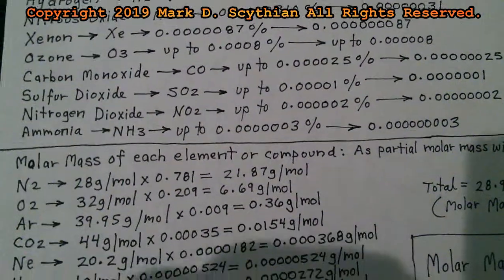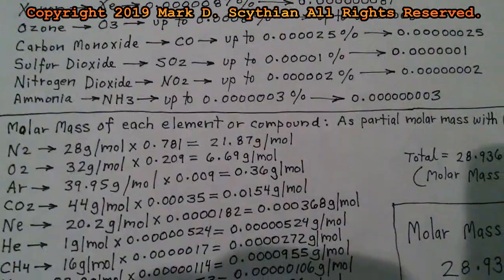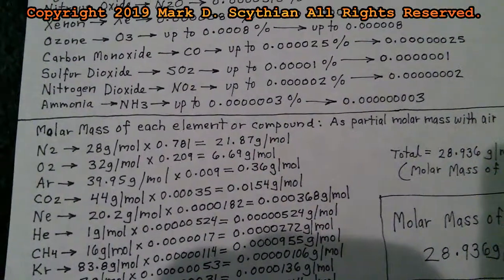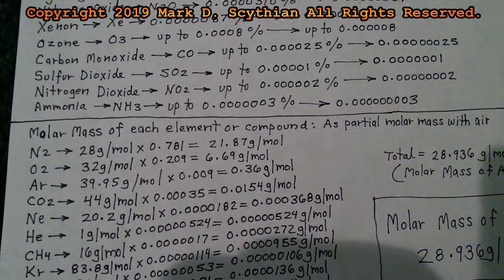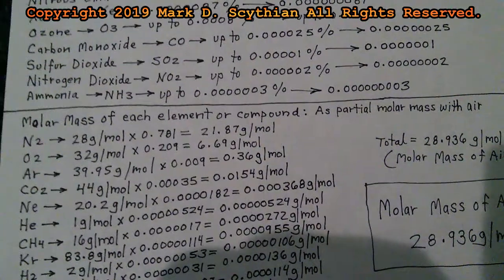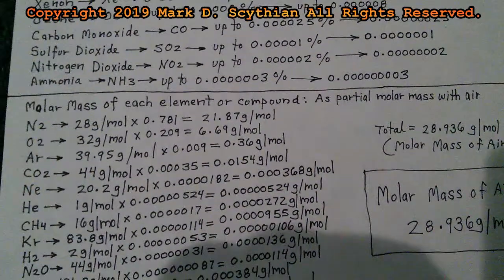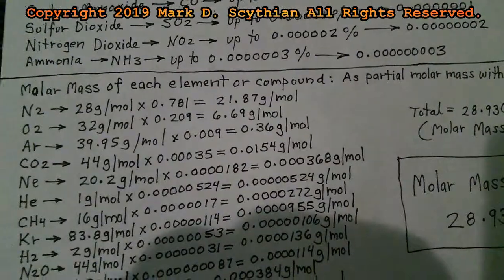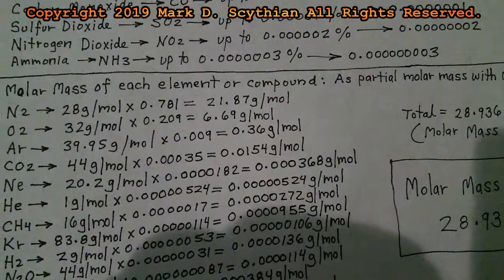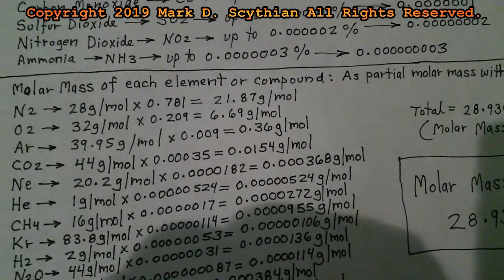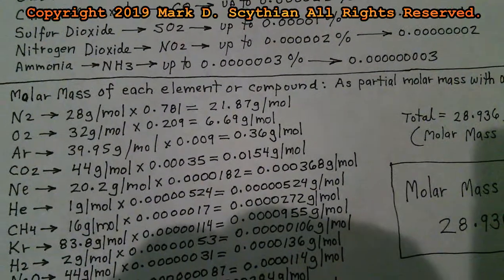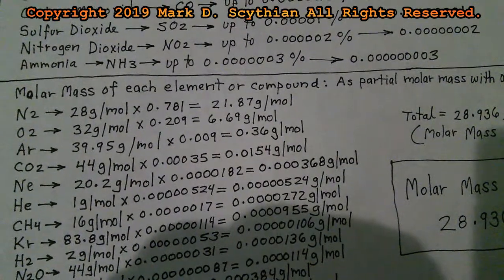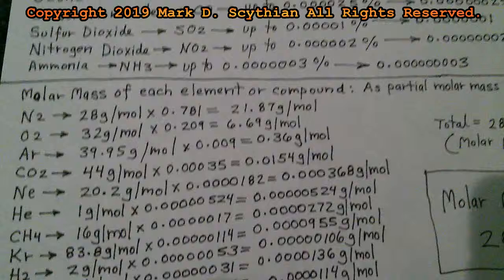When you calculate the molar mass of each element or compound comprising air as partial molar masses, you simply take the molar mass of each element or compound and then multiply it times its percentage composition in decimal form.